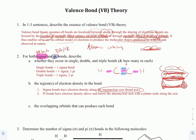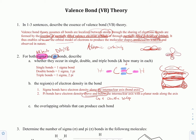Pi bonds are above and below the internuclear axis, and in triple bonds, they can be on the sides as well. This is because we have py, px, and pz orbitals — the z orbital is on the sides, y is on the top and bottom, and x is along the internuclear axis. In triple bonds, we have pi bonds both above and below the internuclear axis and on the sides.